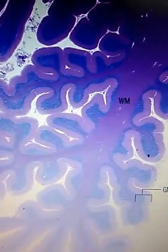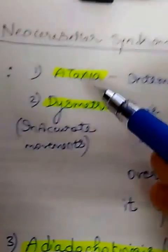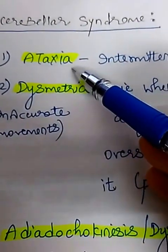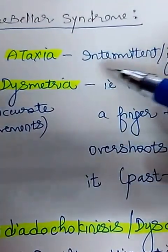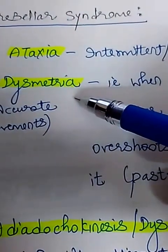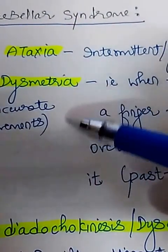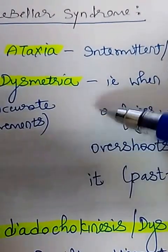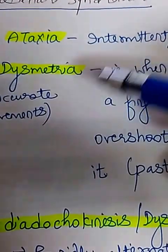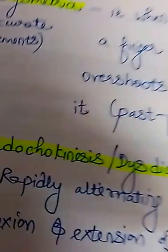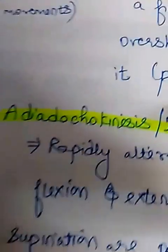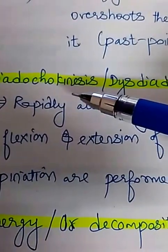Now, what are the features of cerebellar syndrome? First, ataxia occurs, which can be intermittent or jerky. Second, dysmetria can happen — when the patient reaches out his finger to something, he either overshoots that target or deviates from the particular object. This is called past pointing.